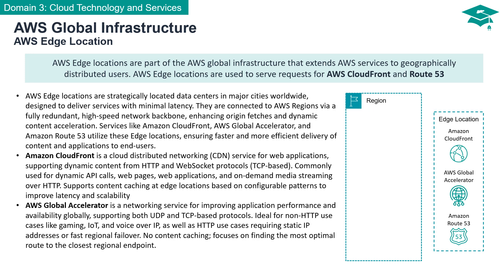For a global performance boost, AWS offers the Global Accelerator service. It is designed to optimize application performance and availability on a global scale, supporting both UDP and TCP-based protocols. This service caters to a wide array of use cases, including non-HTTP scenarios like gaming, IoT, and voice over IP. It's also the preferred choice for HTTP use cases that require static IP addresses or rapid regional failover.